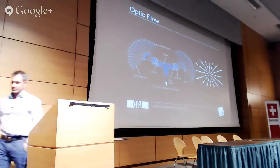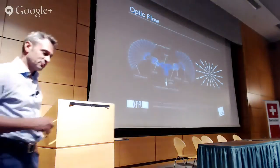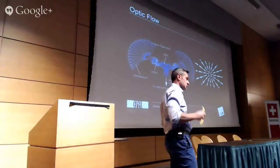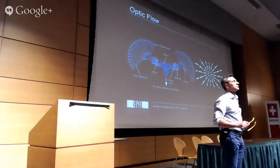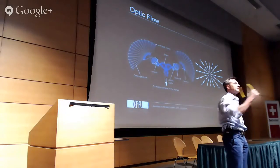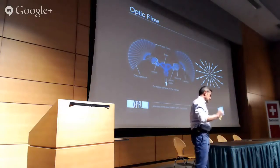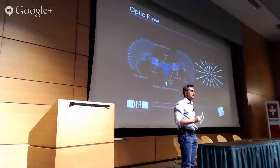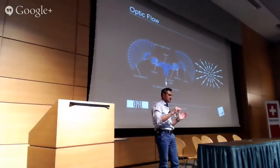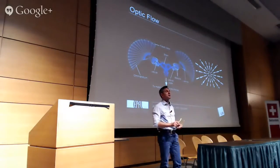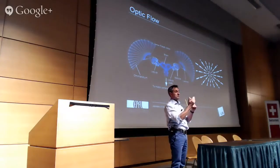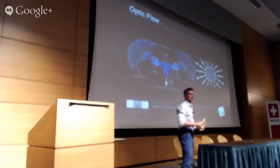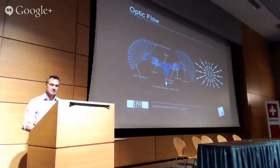Insects have tricks to compensate for rotational optic flow. One trick is that they fly on straight trajectories most of the time and then suddenly turn when getting very close to an object — called saccadic turning. Another way is that they use gyroscope-like structures called halteres, which tell the insect about rotation and acceleration. The brain then discounts the predicted optic flow generated by its own rotation from the experienced optic flow, leaving only the translational component. How exactly insects do this is not yet fully understood.